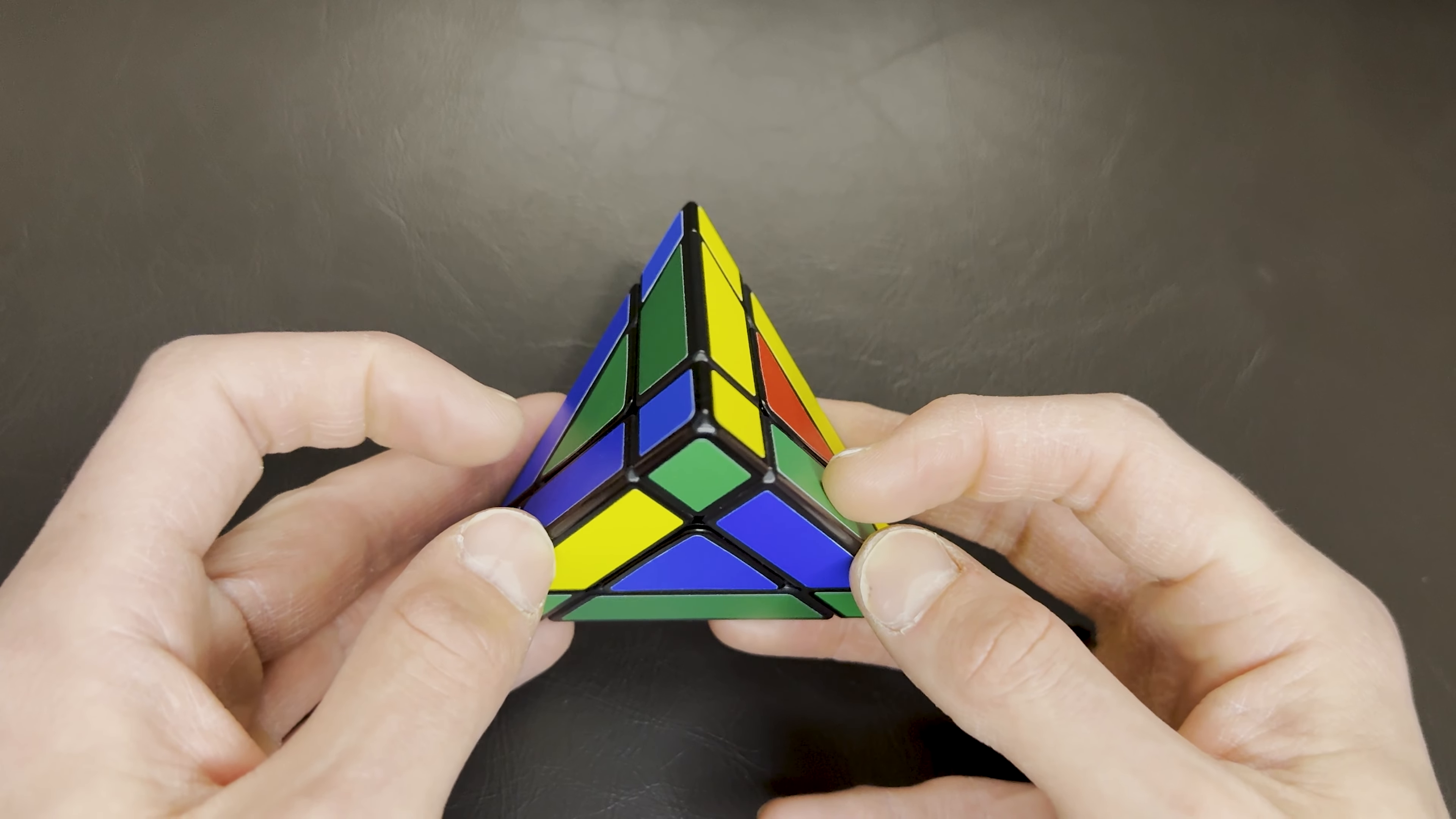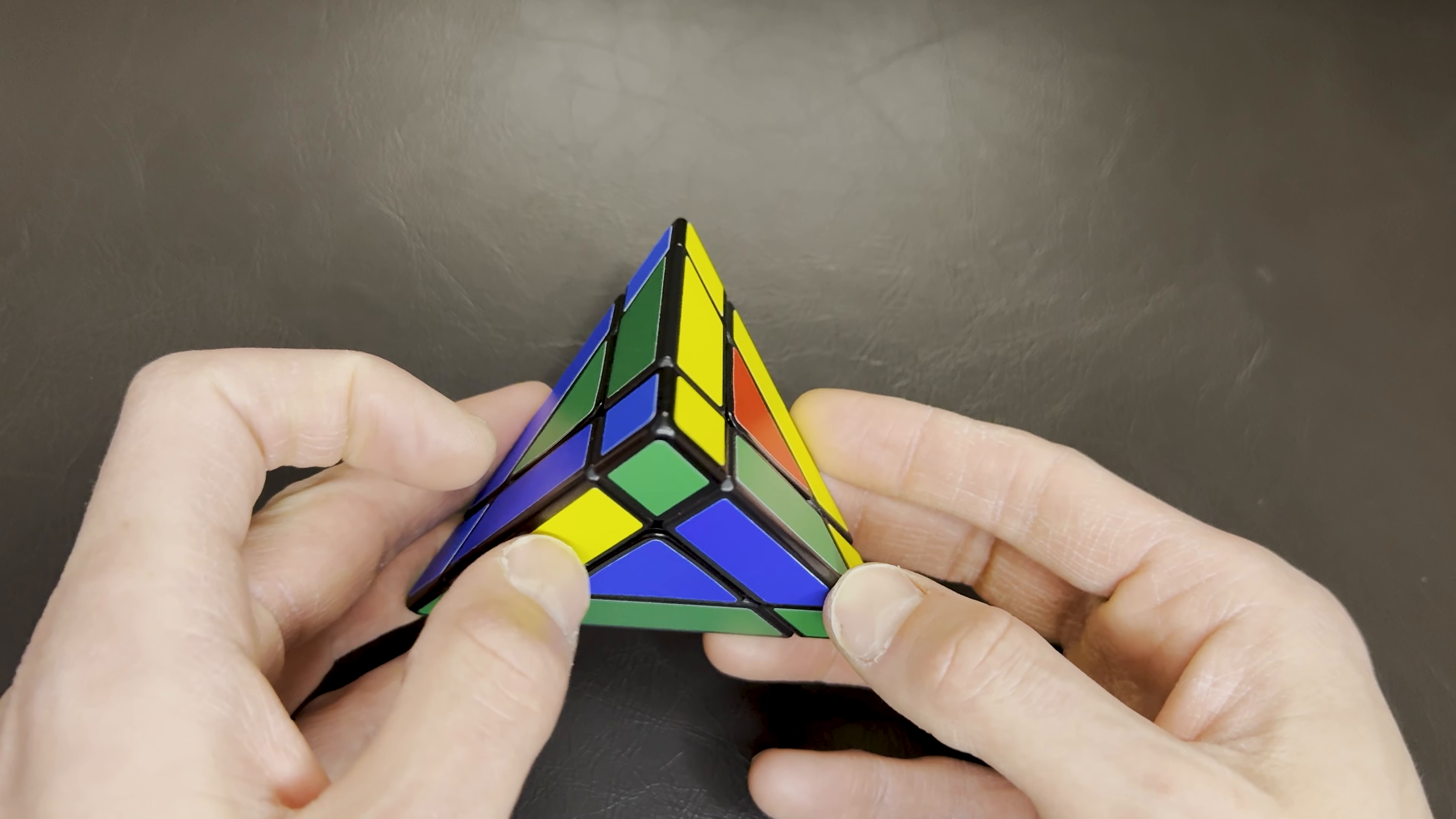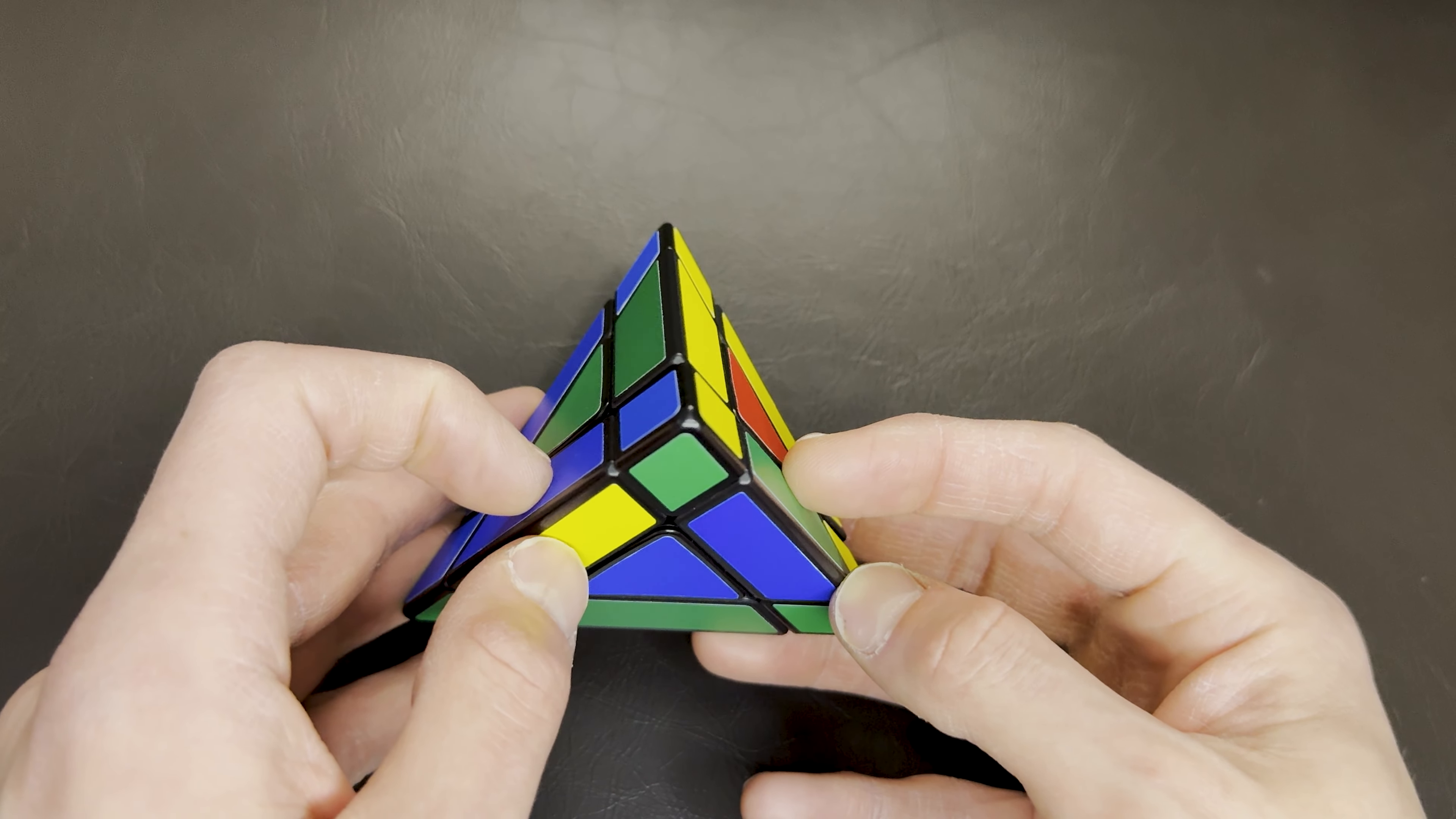For the next step we're going to look at these three pieces here, and we're going to find out which one we can rotate around to match up to be correct. This one's supposed to be green. If we rotate this one around so that green's on my left thumb, the yellow will be here and that's wrong. If we rotate this green and blue one around, the blue would go on the blue and the green would go on the green. So let's do that first.